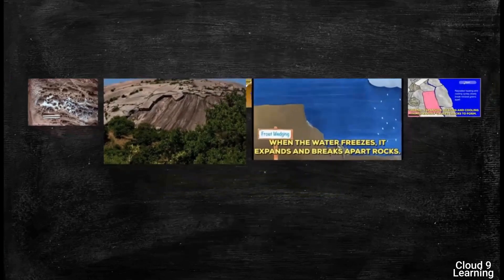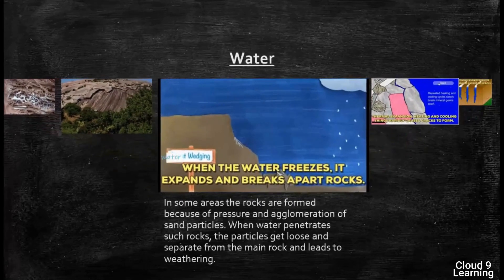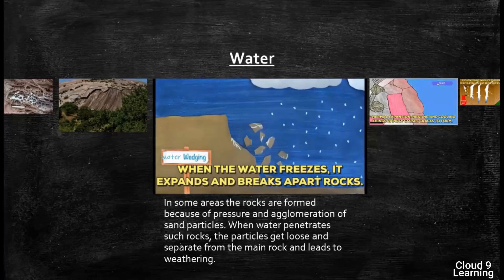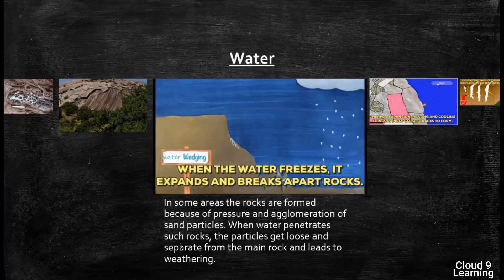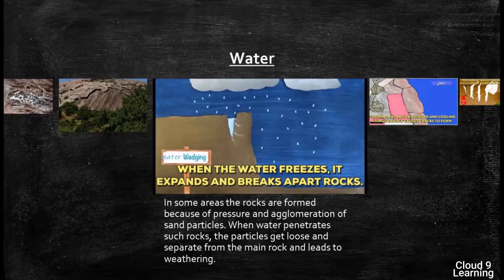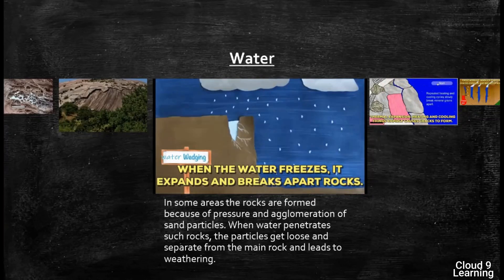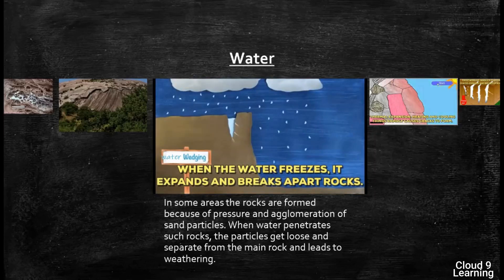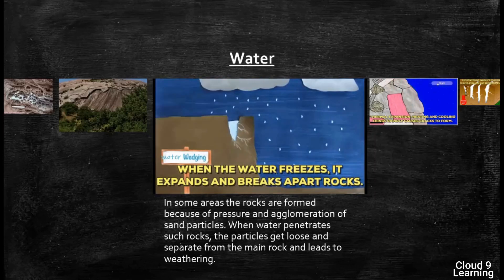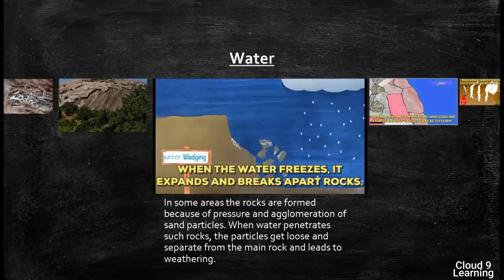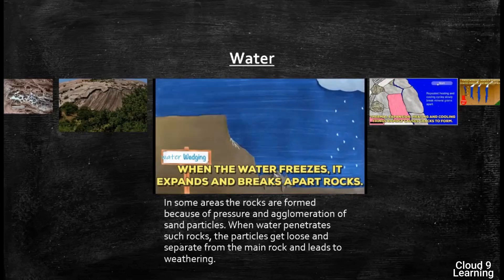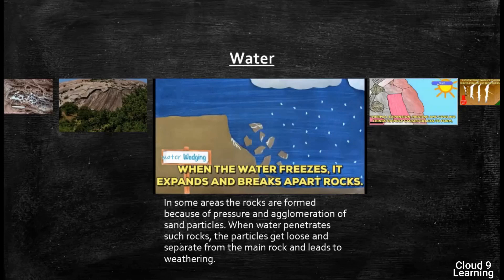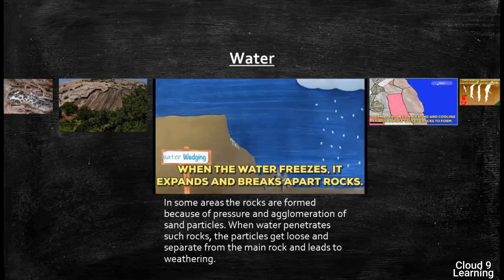The last one is water. In some areas, rocks are formed because of pressure and agglomeration of sand particles. When water penetrates such rocks, the particles get loose and separate from the main rock, leading to weathering of rocks, as seen in this picture showing how water penetrates the rock and breaks it down.